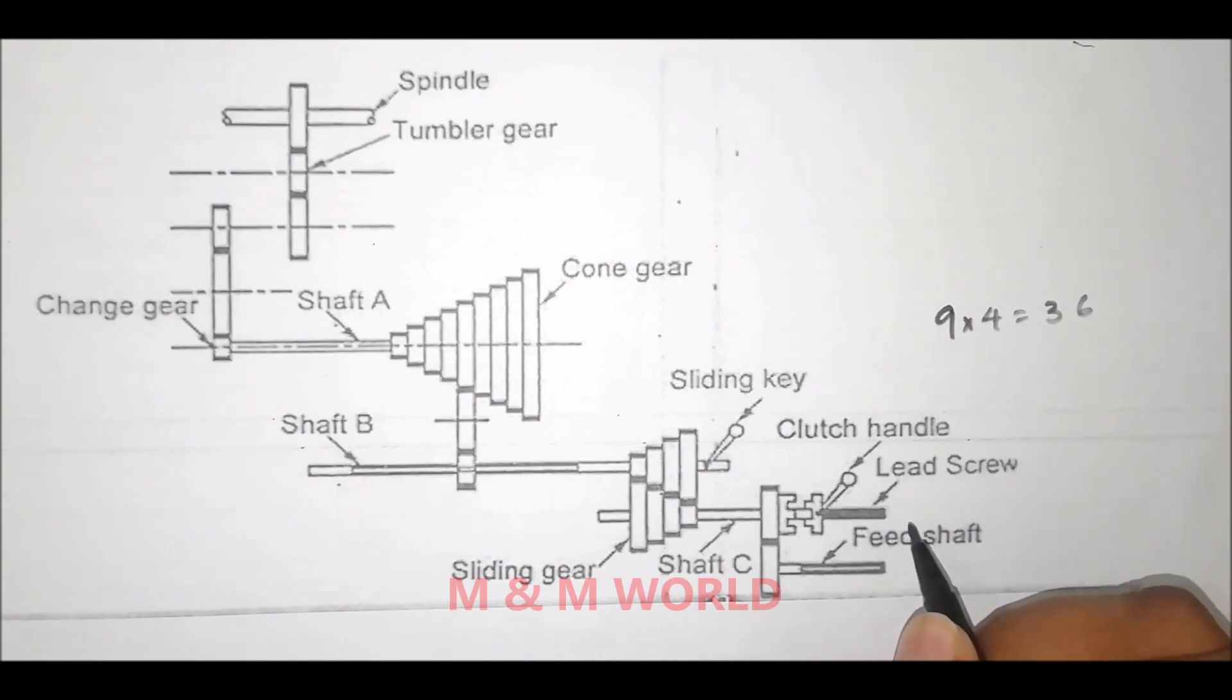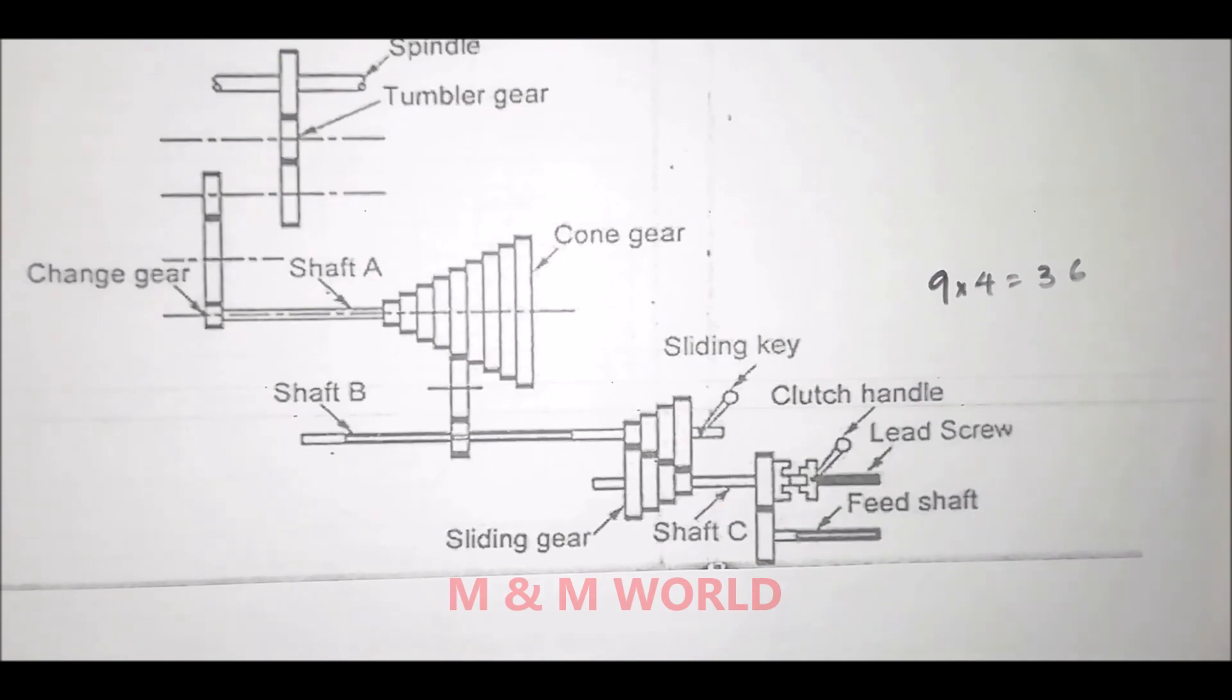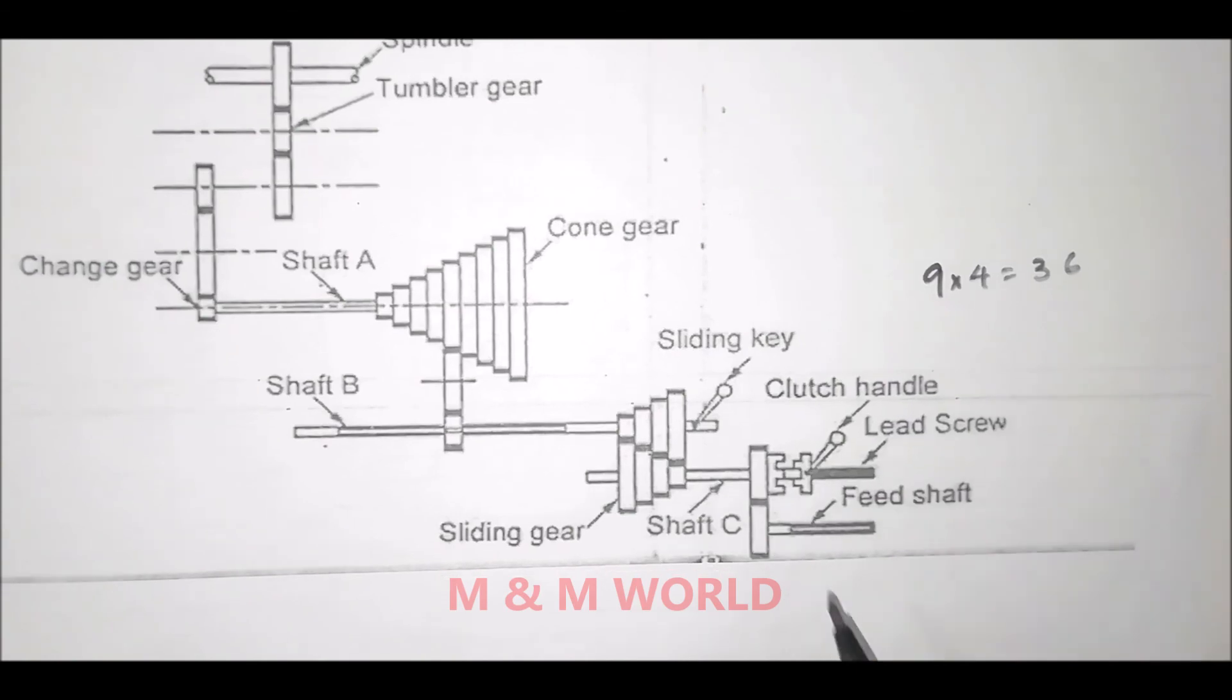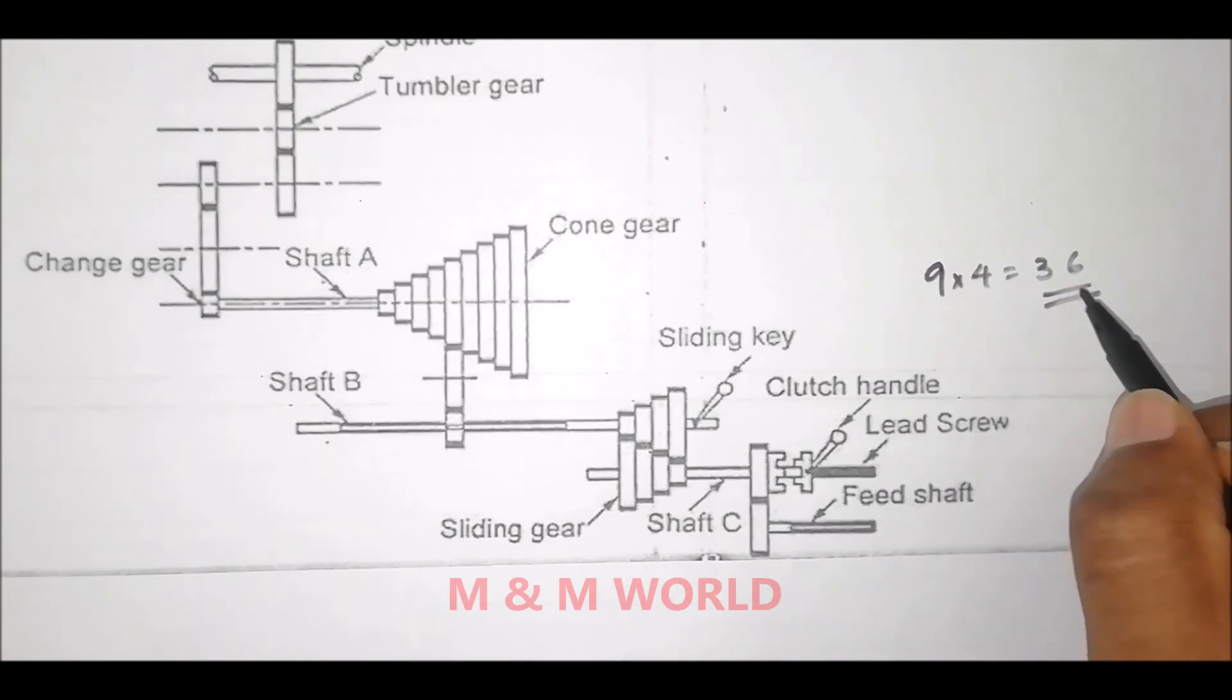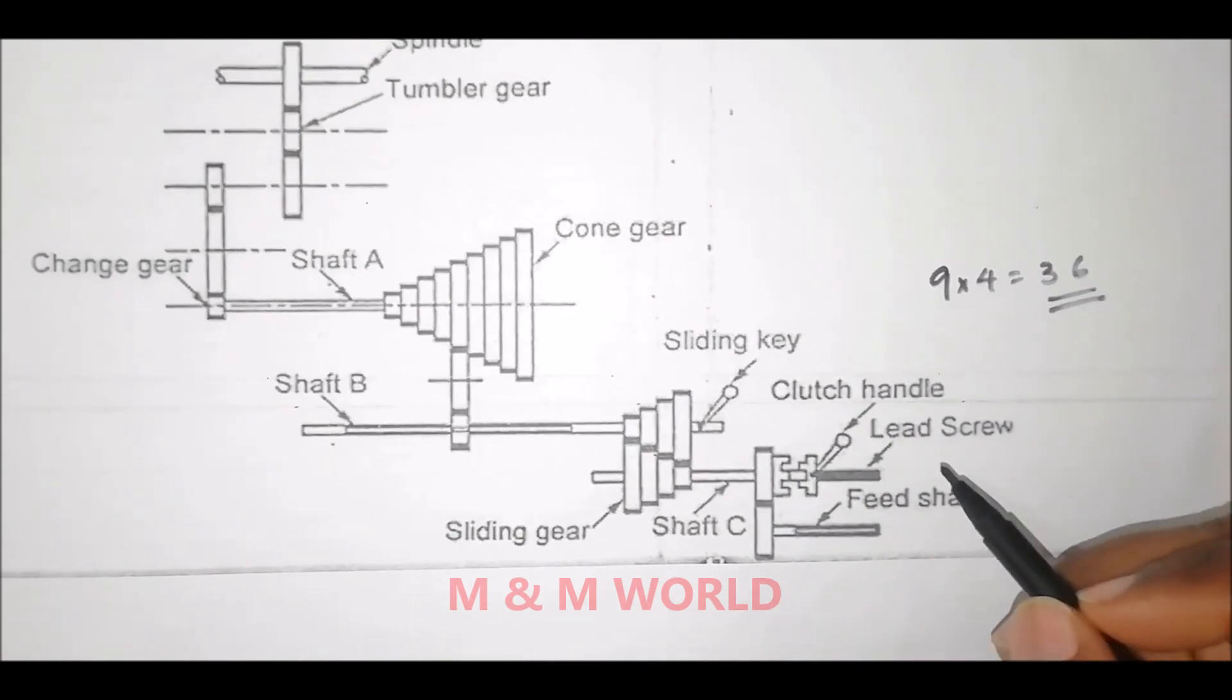Either the lead screw or the feed shaft can get 36 different speeds. The lead screw is a long threaded shaft and it is used only for thread cutting.